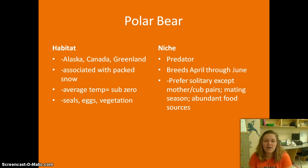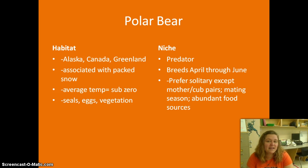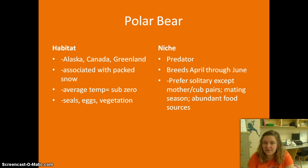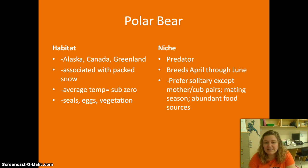If we take a look at a polar bear, a polar bear's habitat includes Alaska, Greenland, Canada — basically anywhere with packed snow, an average temperature below zero, and where we'd find seals, eggs, and vegetation, because that's what the polar bear eats. The polar bear's niche is that it's a predator; its job is to eat other organisms because if it wasn't there to eat them, they would overpopulate. They breed April through June and are mostly solitary unless it's a mom with her cubs, mating season, or there are abundant food sources around.